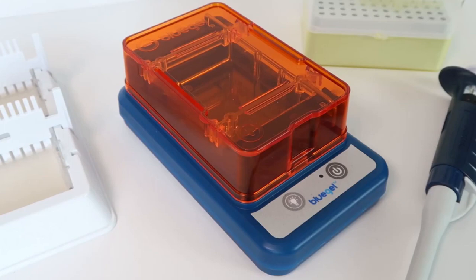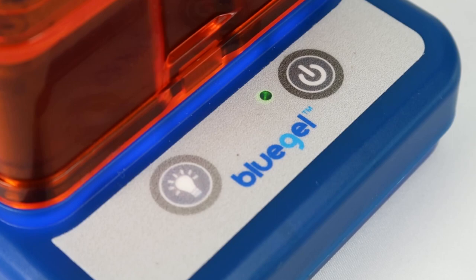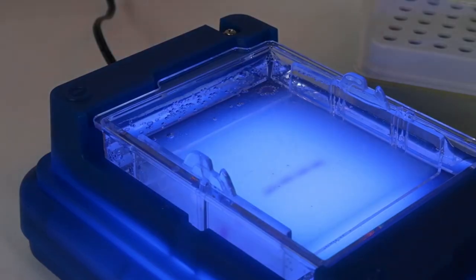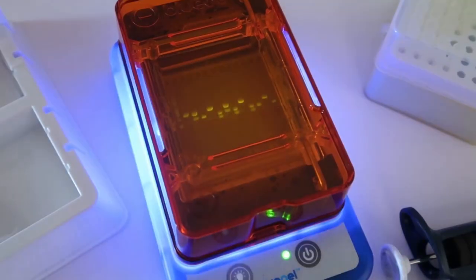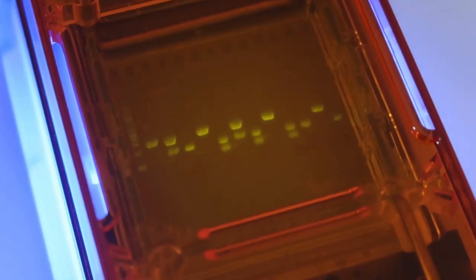BlueGel is a compact, easy-to-use electrophoresis and visualization system. By integrating gel electrophoresis and blue light transillumination into an all-in-one device, you can see results immediately with your gel still in the electrophoresis chamber, with no need for a separate imaging system or time-consuming staining and de-staining.